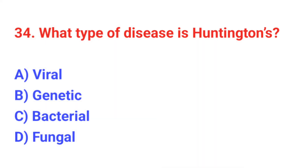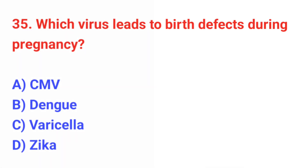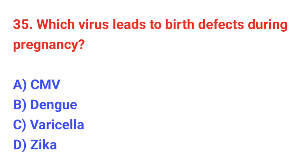Question number 34: What type of disease is Huntington's? The correct answer is B: Genetic. Question number 35: Which virus leads to birth defects during pregnancy? The correct answer is Zika.